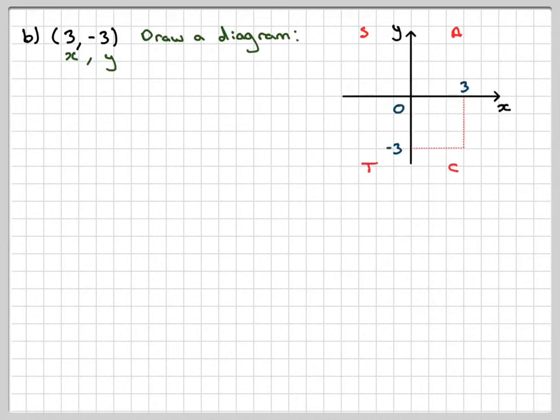In the second case, we've got (3, -3), x, y. Again, drawing a diagram is really important. We're going 3 along, -3 down, so we need to draw a line. We need to find r and this angle.